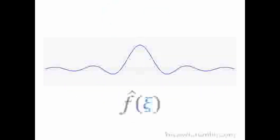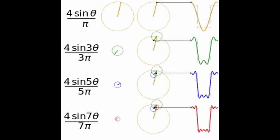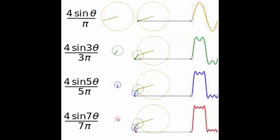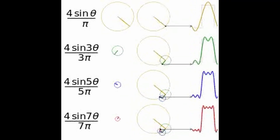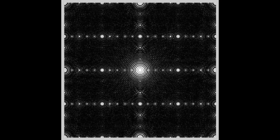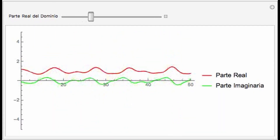A plane curve defined by an implicit equation, where f is a smooth function, is said to be singular at a point if the Taylor series of f has order at least two at that point. For a hypersurface, singular points occur where all the partial derivatives simultaneously vanish — the Jacobian matrix of the first-order partial derivatives of the defining polynomials determines the singular points.